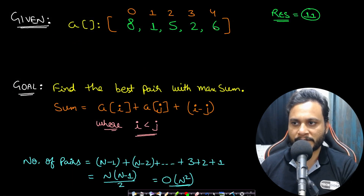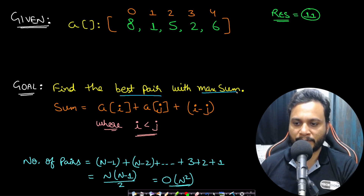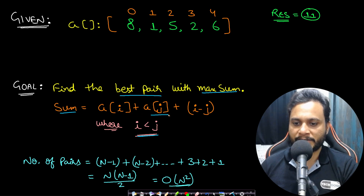Let's look at an example for better understanding. Given the array [8, 1, 5, 2, 6], our goal is to find the pair (i, j) with i < j that maximizes the score defined as a[i] + a[j] + i - j.